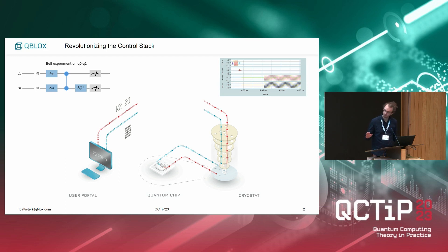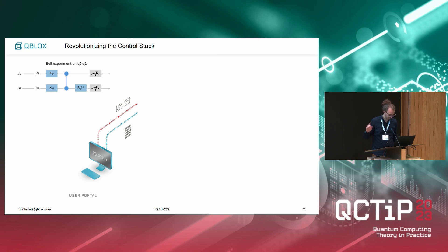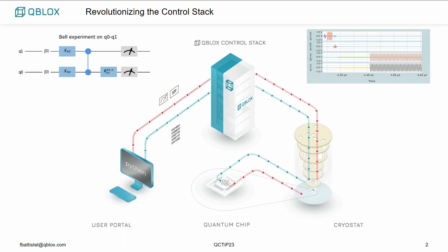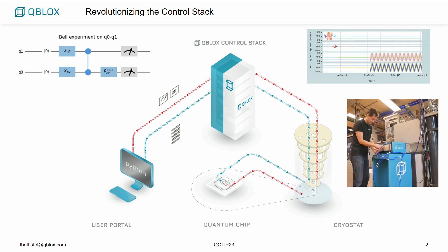At QBlocks we sit in the middle — that's where you have the control stacks, which is first of all hardware. It's really the electronics that generates the signals that go to the qubits. This is just to show how it looks in a lab; we connect cables directly from electronics to the fridge, generating these pulses. We also provide software for users to define their quantum algorithms and compile them down to the actual language of the machine.